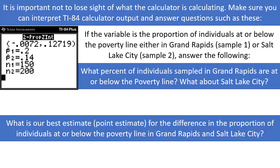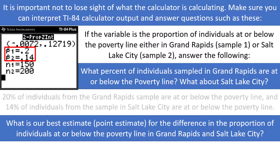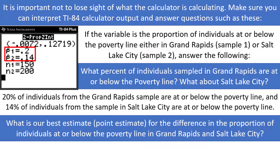The first question asks: what percent of individuals sampled in Grand Rapids and Salt Lake City are at or below the poverty line? Looking at the output, p-hat1 is 0.2 and p-hat2 is 0.14. Therefore, 20% of the individuals from the Grand Rapids sample are at or below the poverty line, and 14% of the individuals in Salt Lake City are at or below the poverty line. These could have been calculated from the problem by simply taking x and dividing by n for each sample.